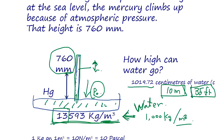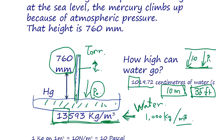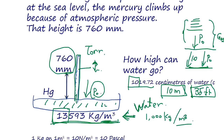Using mercury keeps the tube manageable. In fact, we actually receive a lot of pressure from the atmosphere — equivalent to 10 meters of water depth. We are essentially living under pressure equivalent to being 10 meters below a water surface, with all the atmospheric gas above pushing down on us.